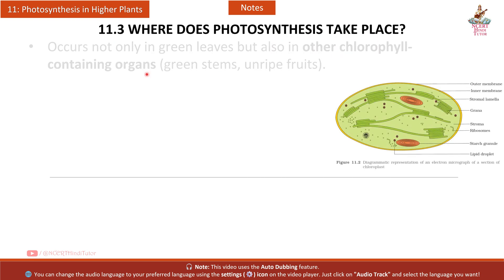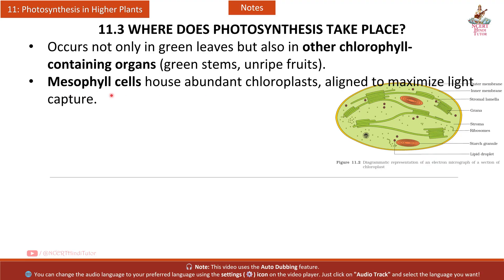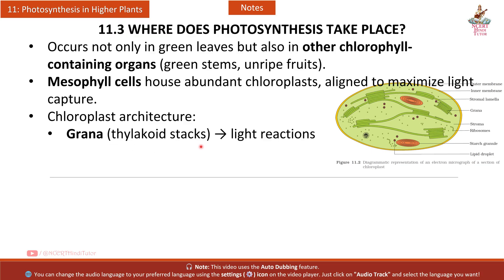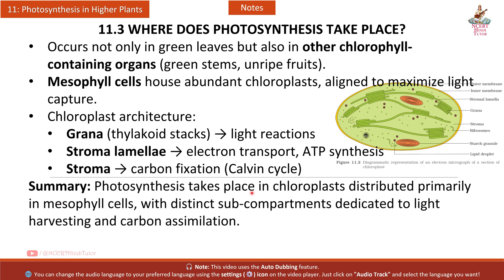Section 11.3: Photosynthesis occurs not only in green leaves but also in other chlorophyll-containing organs such as green stems and unripe fruits. Mesophyll cells house abundant chloroplasts aligned to maximize light capture. Chloroplast architecture: grana (thylakoid stacks) host light reactions; stroma lamellae handle electron transport and ATP synthesis; stroma is the site of carbon fixation via the Calvin cycle.